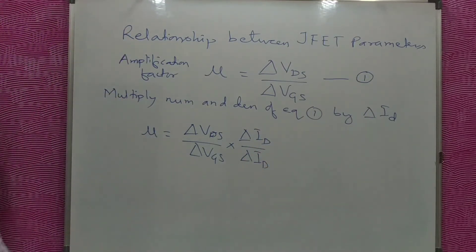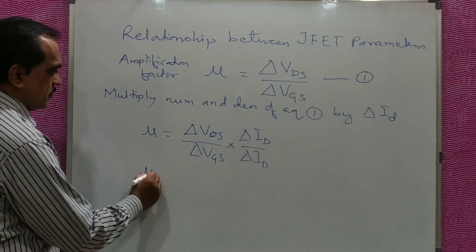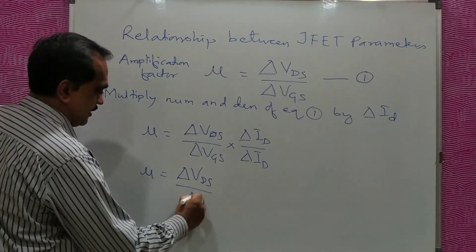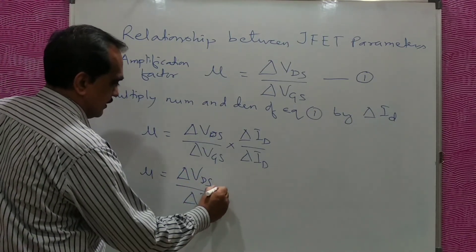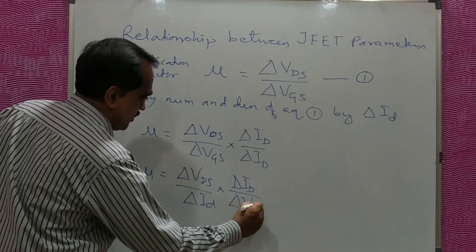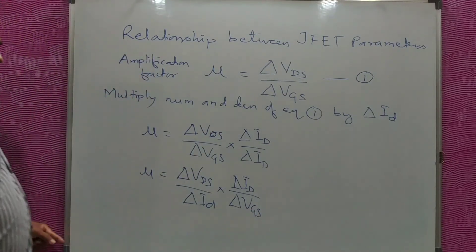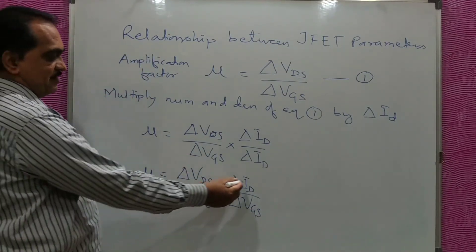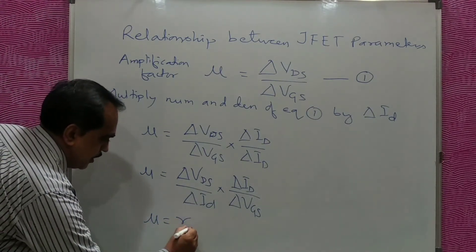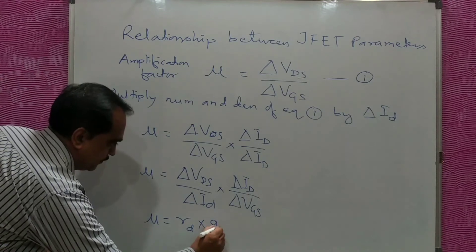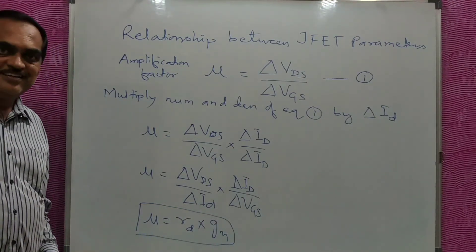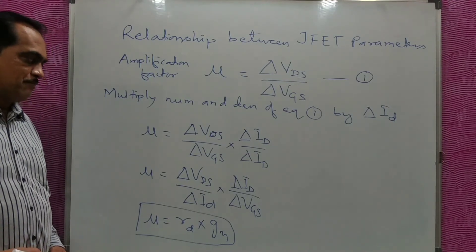If you rearrange this equation, you get Mu is equal to delta VDS upon delta ID, multiplied by delta ID upon delta VGS. The first term, delta VDS upon delta ID, is nothing but AC drain resistance Rd, and the second term, delta ID upon delta VGS, is nothing but transconductance Gm. So you can write Mu equals Rd multiplied by Gm — amplification factor equals AC drain resistance multiplied by transconductance.